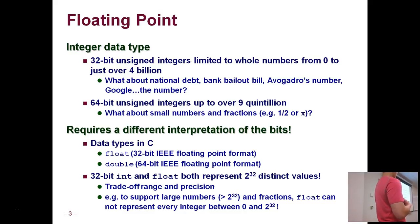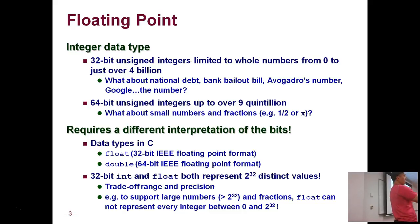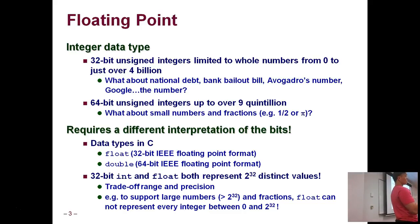It's important to note that a 32-bit int and a 32-bit float can both only represent 2 to the 32 distinct values. There is a trade-off: because the float is trying to get you really large numbers and really small numbers, it is impossible for the float to represent every single integer from 0 to 4 billion. It's got to stop representing whole numbers eventually, and there's a well-defined point where it stops, which we'll get to later.